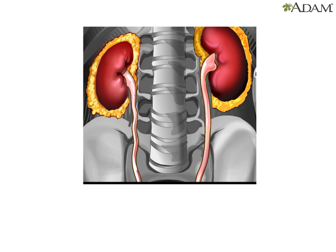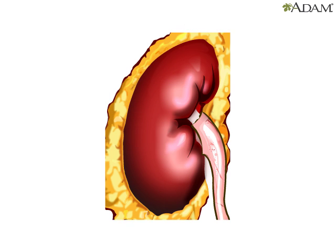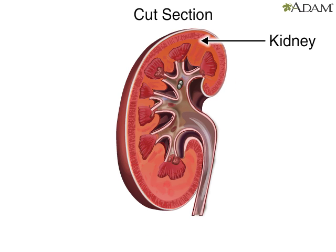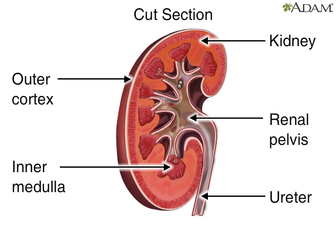Now let's enlarge the kidney to get a closer view. Here's a cross-section of the kidney. Urine flows from the outer cortex to the inner medulla. The renal pelvis is the funnel through which urine exits the kidney and enters the ureter.